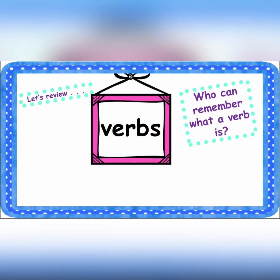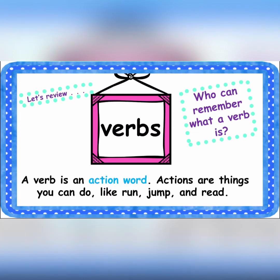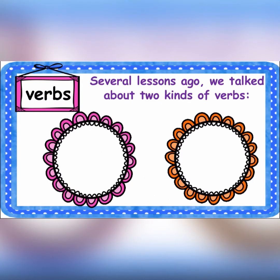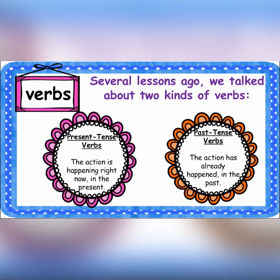What is a verb? A verb is an action word or a doing word. Actions are things you can do, like run, jump, and bridge. We have two kinds of verbs: the present tense verb and the past tense verb. The present tense verb is an action that is happening right now, while the past tense verb is an action that has already happened in the past.